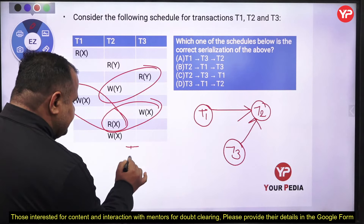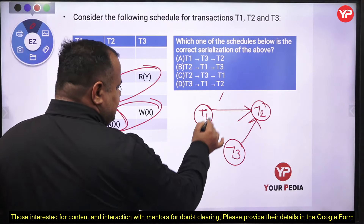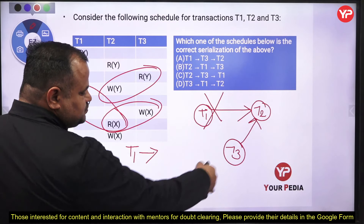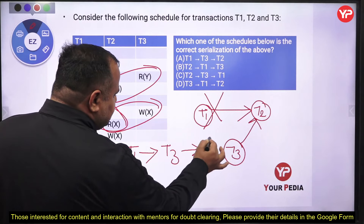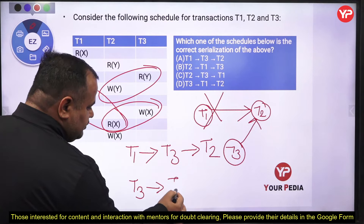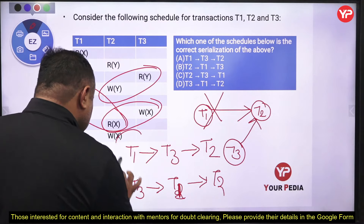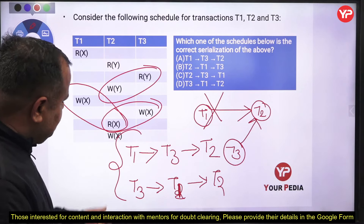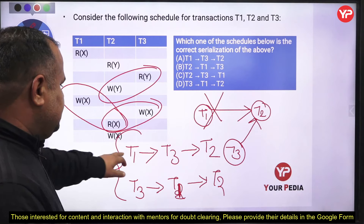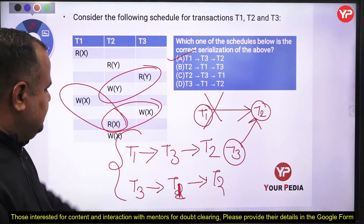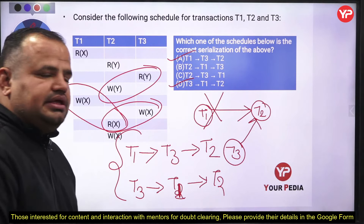We can start from either T1 or T3. If we start with T1, we delete T1 and then the next vertex with no incident edge is T3, followed by T2 — giving sequence T1, T3, T2. If we start with T3, after deleting T3 we can choose T1 next, giving T3, T1, T2. So we have two valid serial sequences. Matching with the options: A is T1, T3, T2 and D is T3, T1, T2. Both A and D are correct options.